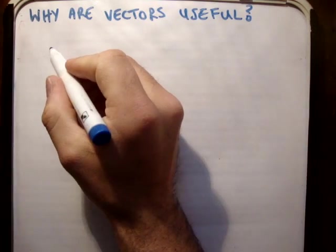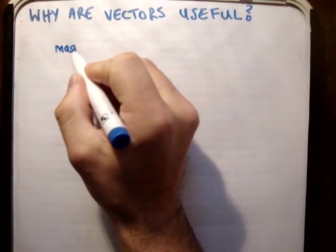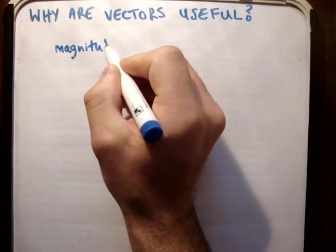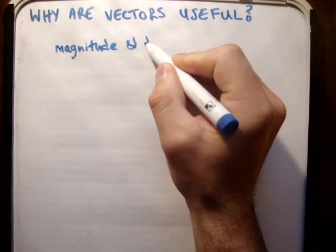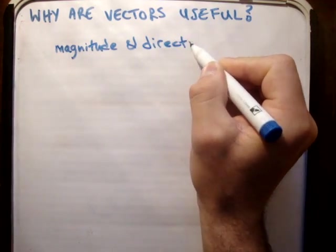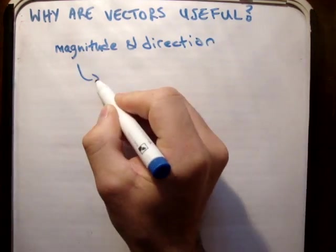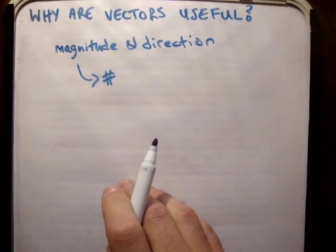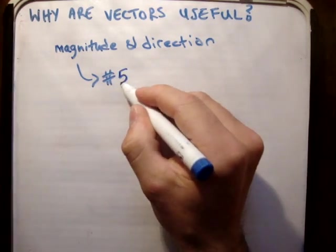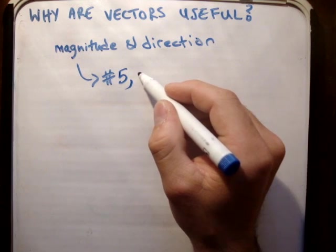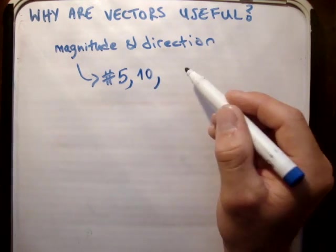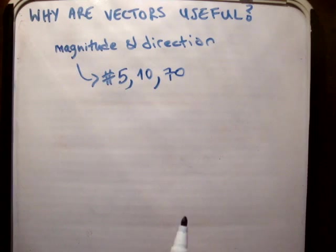A vector is something with both magnitude and direction. What is a magnitude? That is the number associated with it. For example, you might be 5 meters tall, 10 miles long, or 70 kilos heavy.